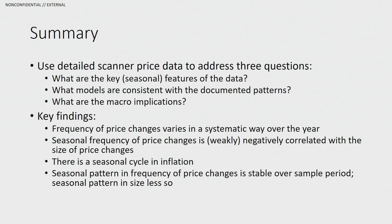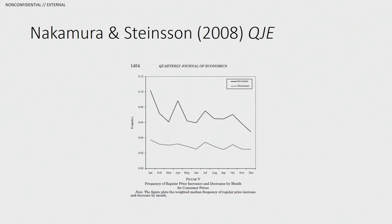They report four key results. First, the frequency, and to a lesser extent the size, of price changes exhibits a very obvious seasonal pattern. Second, the seasonal pattern of frequency of price changes is weakly negatively correlated with the size of price changes. Third, there is a seasonal pattern in inflation. Fourth, these patterns seem to be pretty stable over time. The results complement in many ways the seasonal patterns first documented by Nakamura and Steinsson in U.S. data in their well-known 2008 paper.